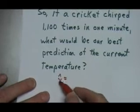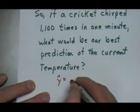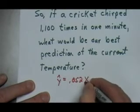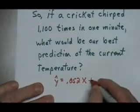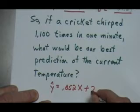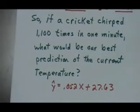Y hat, the predicted temperature, can be found by taking 0.052 and multiplying it times x, which is my input number of chirps that the cricket made, and adding to that, since this is positive, 27.63. This is a formula that will give me a pretty good prediction about what the temperature is. So, let's do a specific example, then.